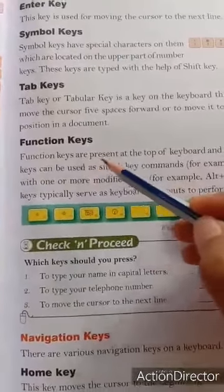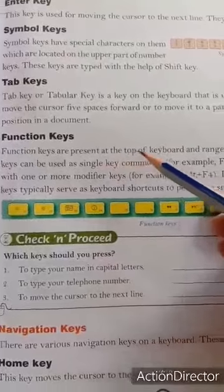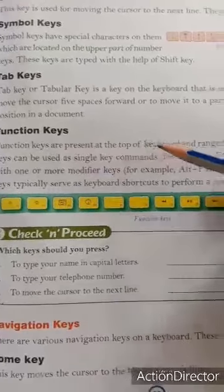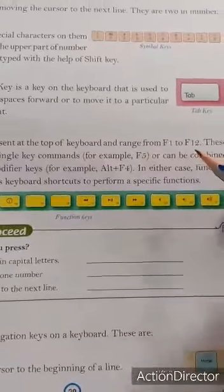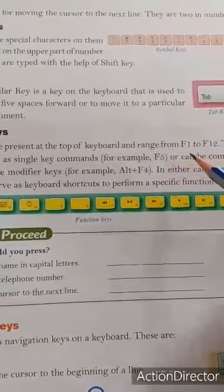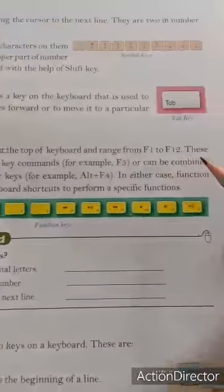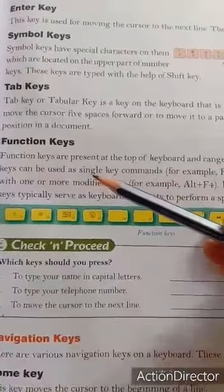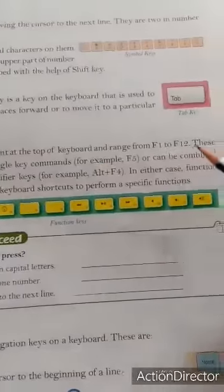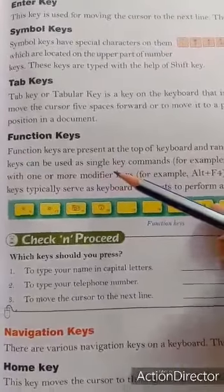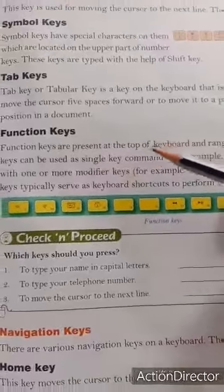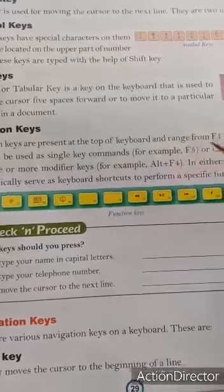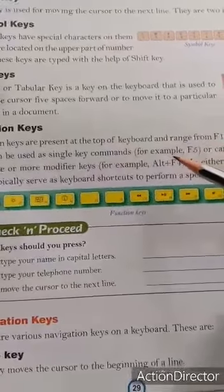Next is function keys. Function keys are present at the top of the keyboard — function keys keyboard के top में स्थित होते हैं, सबसे ऊपर। And they range from F1 to F12। These keys can be used as single key commands — एक बार में एक work करने के लिए। For example, F5 का प्रयोग हम computer को refresh करने के लिए करते हैं।